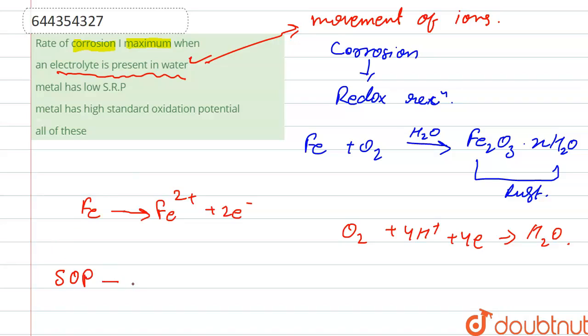It means it has more tendency to undergo oxidation, right? So this will help in formation of rust easily. And when standard reduction potential decreases, it is also helpful for undergoing oxidation.